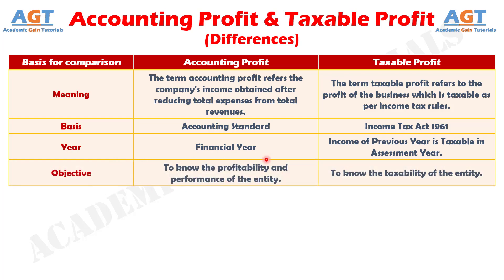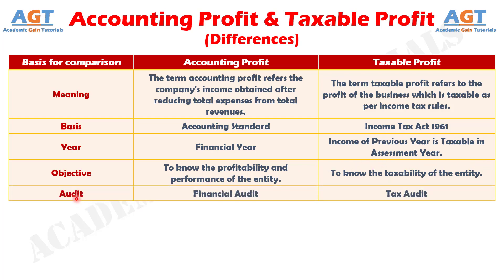Number 4: accounting profit is used for the purpose of knowing a company's profitability in the specified period, while taxable profit is used for the purpose of identifying the tax payable by the company. Difference number 5: a financial audit is conducted for recognizing the correct accounting profit, while a tax audit is carried out for recognizing the actual taxable profit.